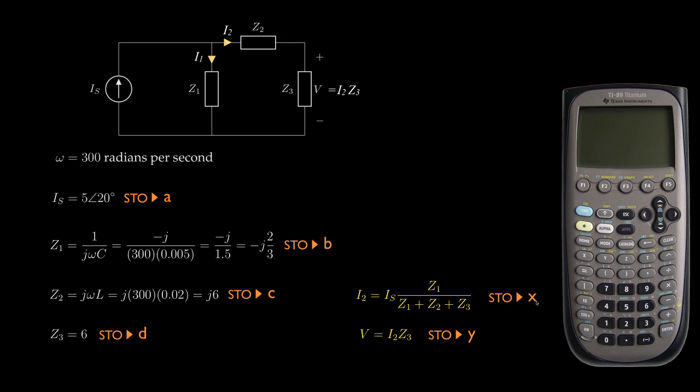Then we'll carry out this computation by taking A, which is IS, times B, which is Z1, and I'll divide that by B plus C plus D. I'll store that result in X. When I have that completed, then I'll take the current I2, which is stored in X, multiply it by the impedance Z3, which has been stored in D, I'll put that in Y, and that'll be my final result. I'll take a look at the amplitude and phase, and that will tell me the amplitude and phase for the 300 radian per second sinusoidal voltage that appears across the output resistor.